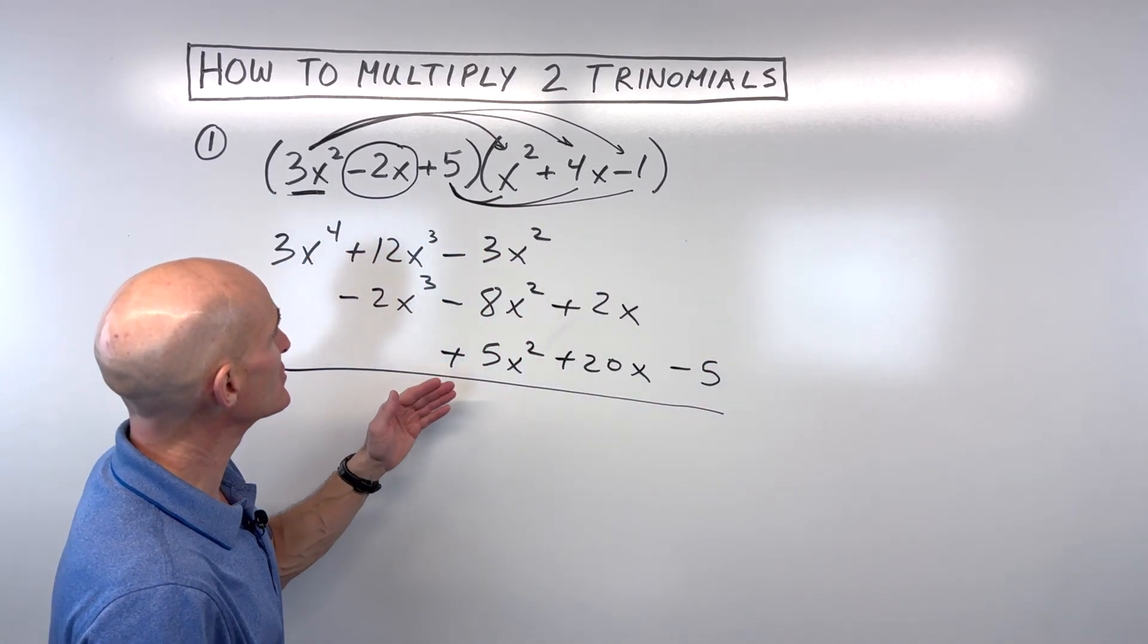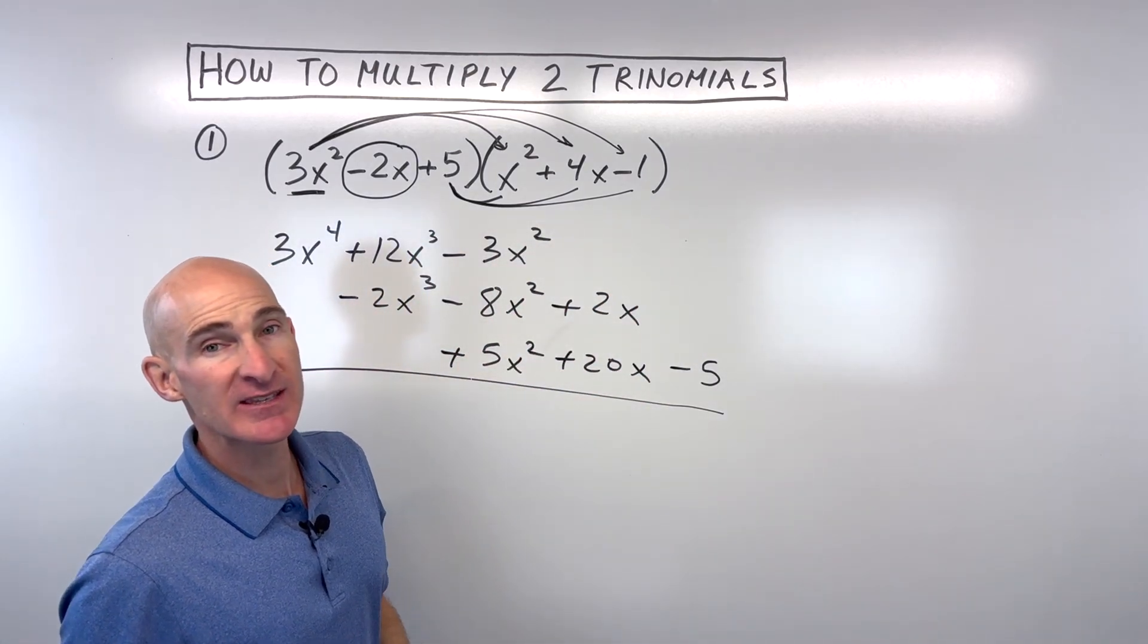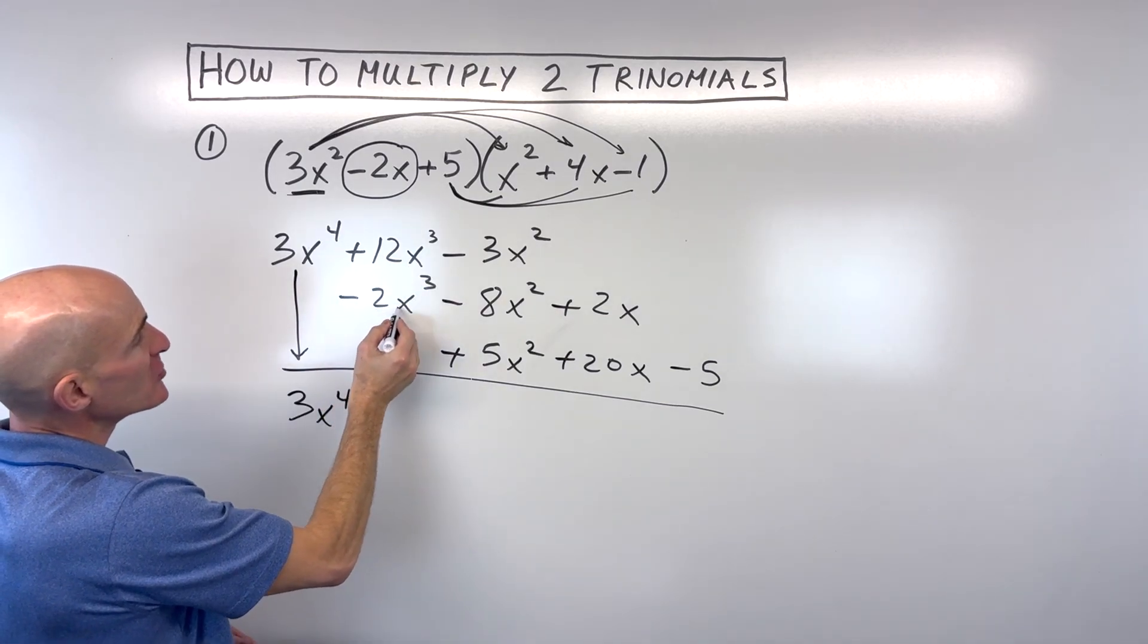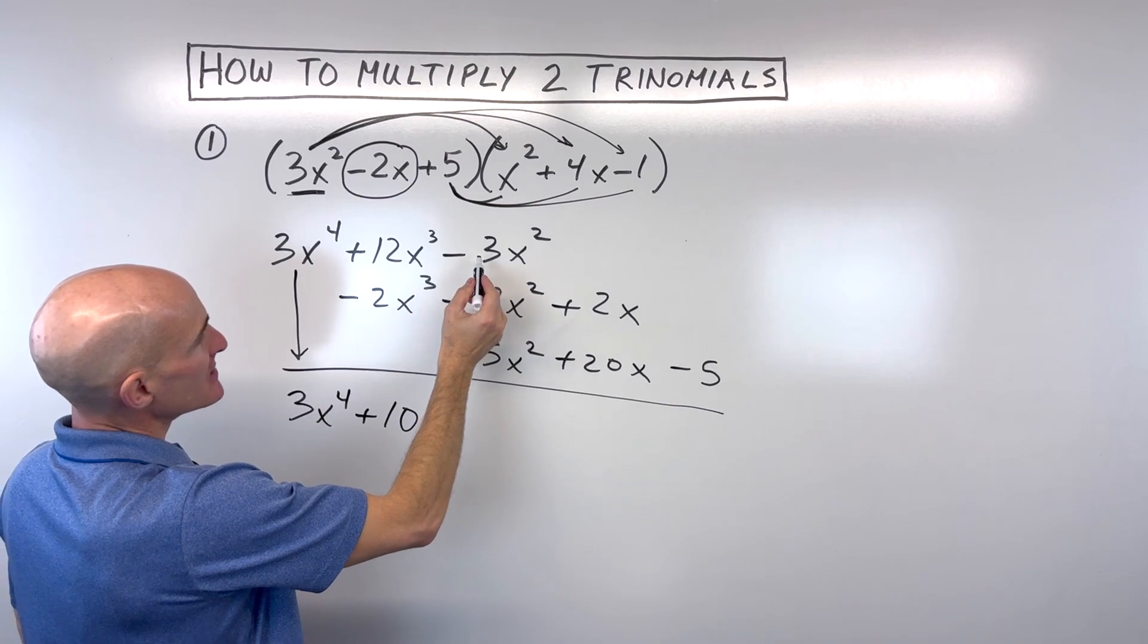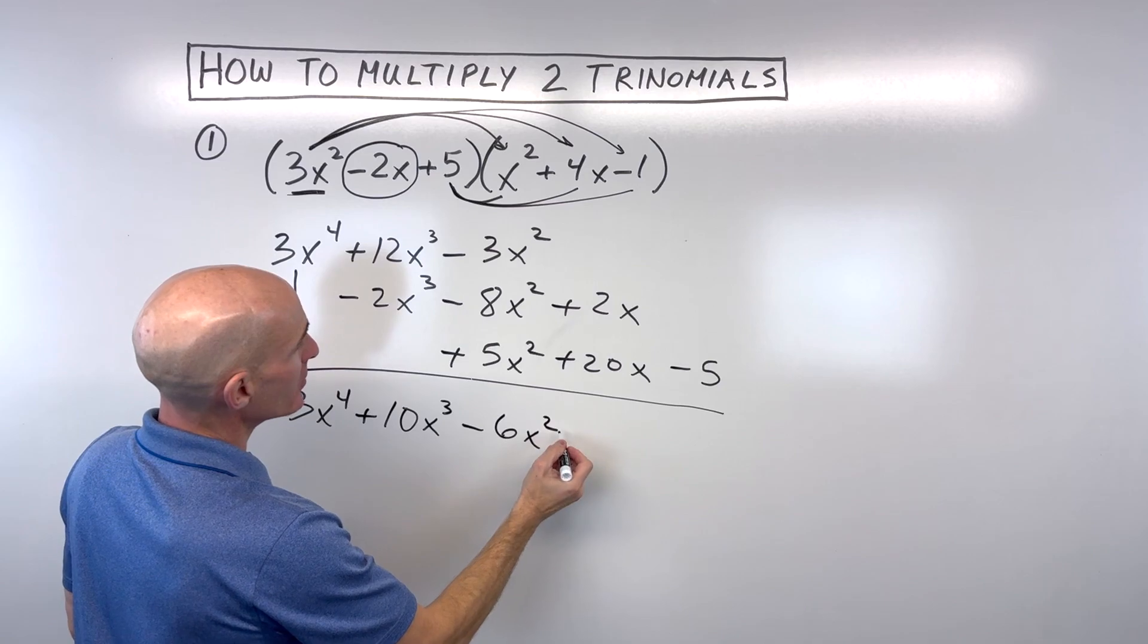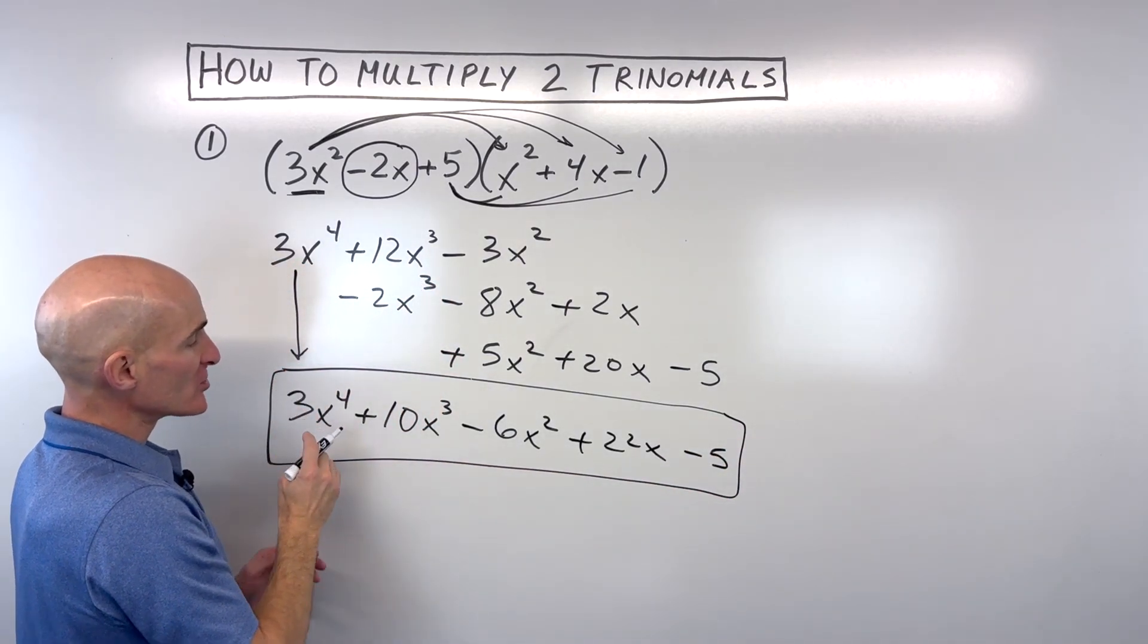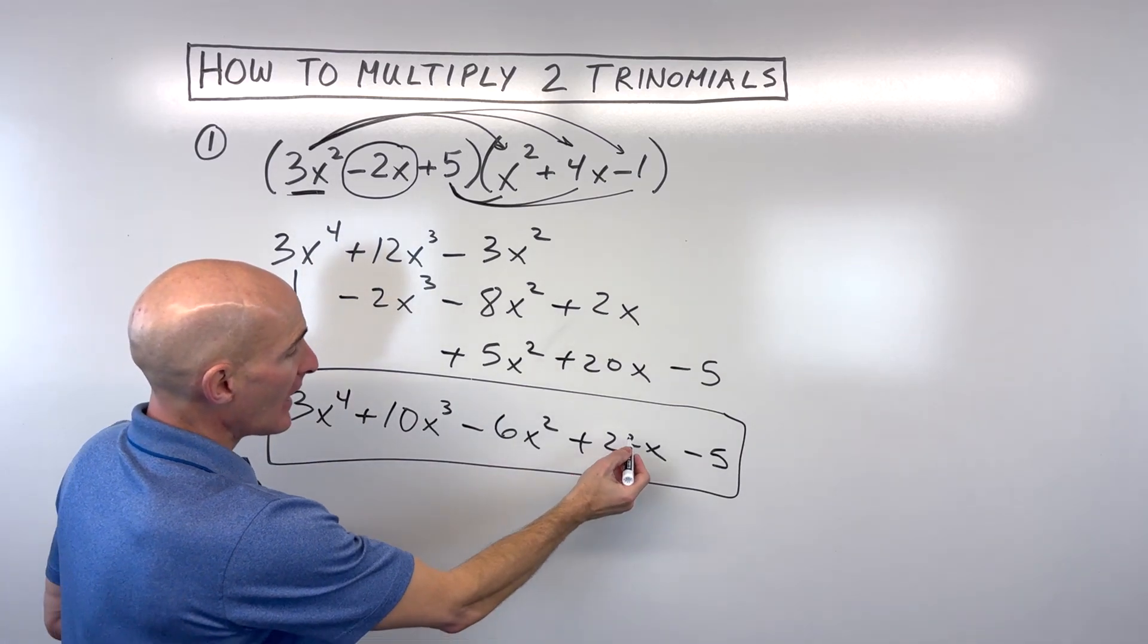The only reason I set it up this way is just so that the x cubes would line up, the x squareds, the x's. Just makes it a little bit easier when we combine like terms at the end here. So let's just go ahead and bring down this 3x to the 4th. There's nothing we can combine that with. 12x cubed minus 2x cubed is 10x cubed. Let's see. Negative 3 plus negative 8 is negative 11 plus 5 is negative 6x squared. 2 plus 20 is 22x. And we'll bring down the negative 5. There's nothing to combine that with. And that's our final result. So you want to write it in descending order from the highest power to the lowest. And you got it.